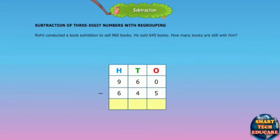Subtract the digits in the ones place. As the number to be subtracted is bigger in the ones place, we need to regroup. 6 tens and 0 ones is equal to 5 tens and 10 ones. 10 ones minus 5 ones is equal to 5 ones.